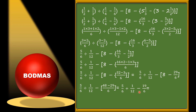Here are two operations: division and subtraction. According to BODMAS, we do division first. To divide, we find the reciprocal of 1/12, which is 12. So we get 5/6 × 12 minus 19/6. We simplify: 6 and 12 cancel — 6 ones are 6, 6 twos are 12 — and 5×2 = 10. So we have 10 minus 19/6.